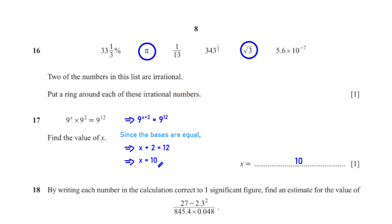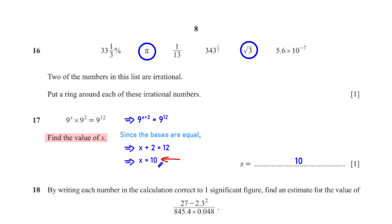Find the value of x. Since these two terms have the same base and are multiplying, their powers add, giving 9^(x+2) = 9^12. Since the bases are equal on both sides, their powers must also be equal: x + 2 = 12. Subtracting 2 from both sides gives x = 10.